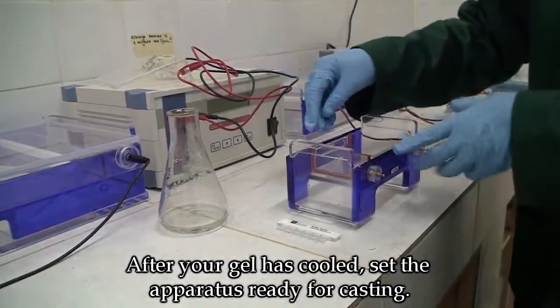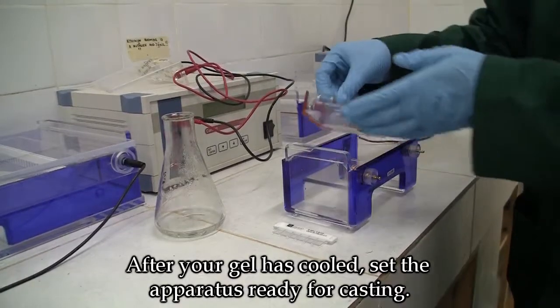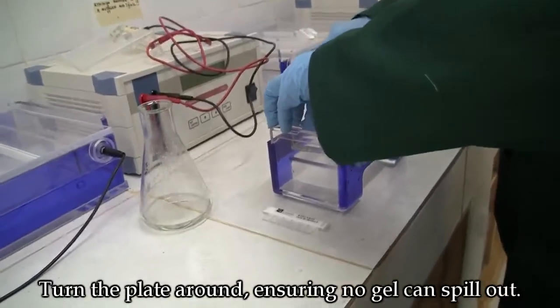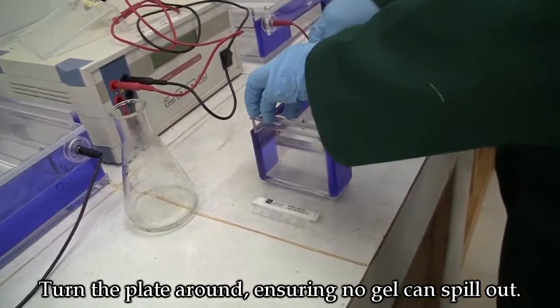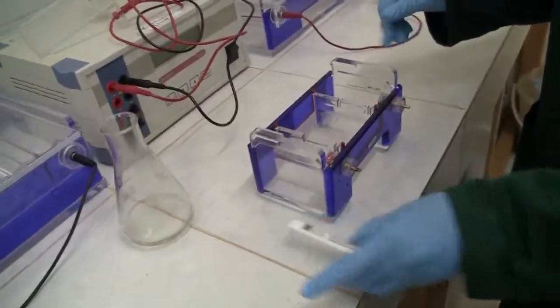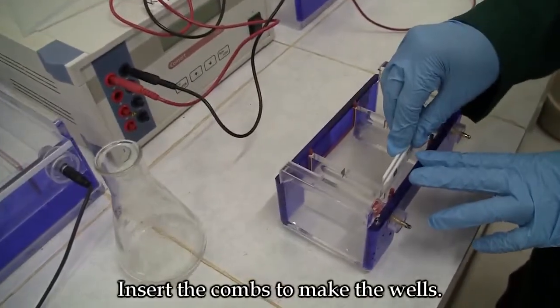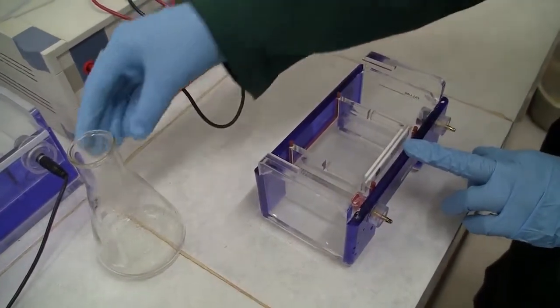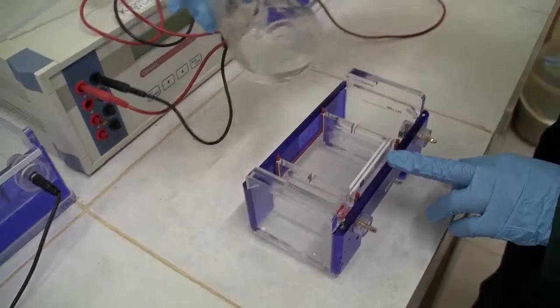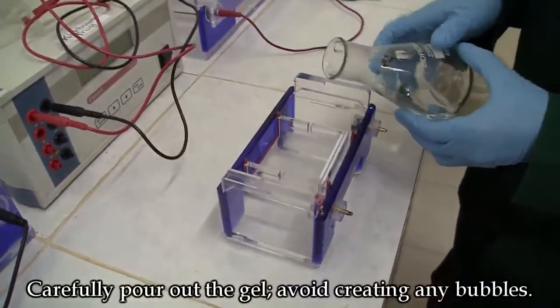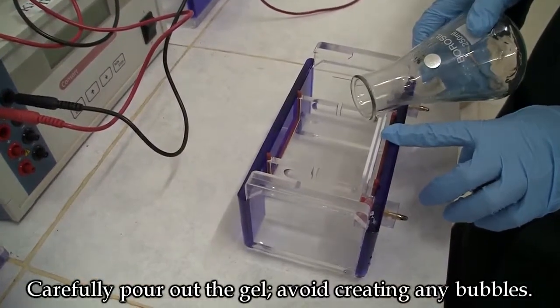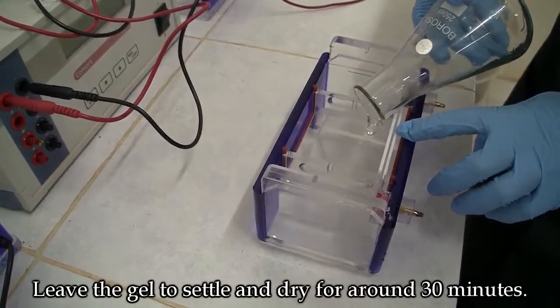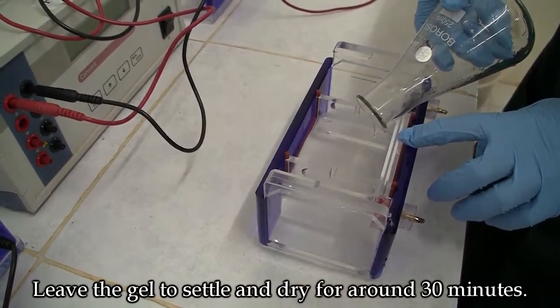After your gel has cooled, set the apparatus ready for casting. Turn around the plate and ensure that no gel will spill out. Place the comb to make the wells and carefully pour out the gel. Avoid any bubbles. Leave the gel to settle and dry for around 30 minutes.